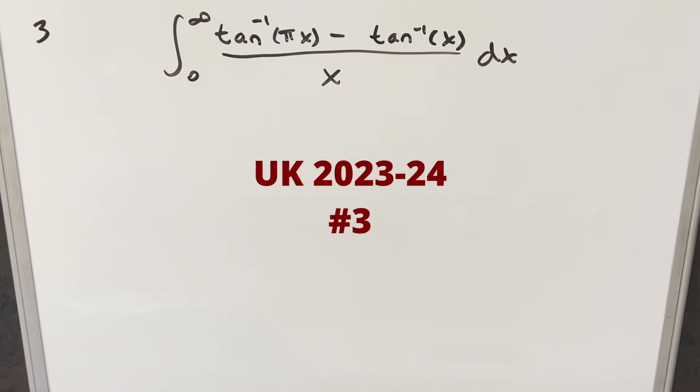Today we have here a tricky integral. This one's from the UK Integration Bee 2024 problem 3. We have the integral from 0 to infinity, arctan of π x minus arctan of x all over x dx.